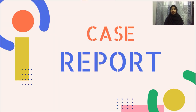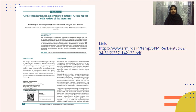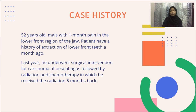We will now move on to the case report, extracted from the SRM Journal of Research in Dental Science, titled 'Oral Complications in an Irradiated Patient: A Case Report with Review of the Literature.' The case involves a 52-year-old male patient with a complaint of pain in the lower front region of the jaw for one month. The pain was intermittent, dull-aching, and localized in nature, with discomfort on taking food. He had a history of extraction of lower front teeth one month prior, and a medical history of surgical intervention for carcinoma of the esophagus within the last year, followed by radiation and chemotherapy. He received a course of radiation five months back and was also under psychiatric treatment.